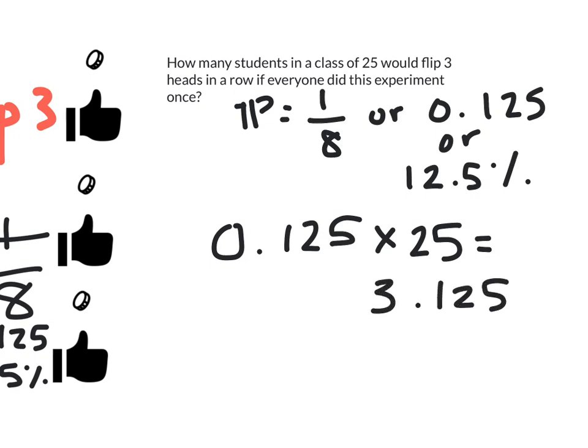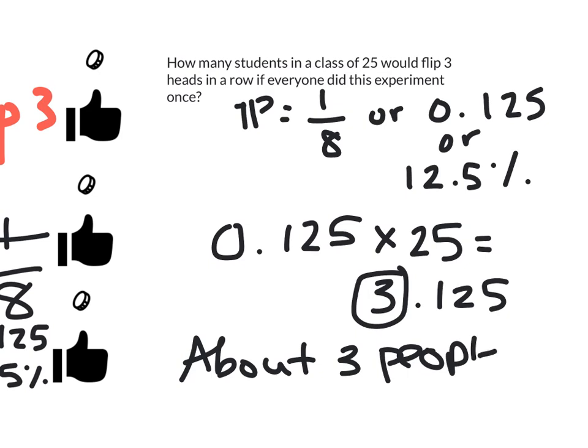Well, we don't have fractions of students, but this is an answer that's pretty close to 3. So we would say about, we would expect about three people to get this result if we were to do this experiment 25 times.